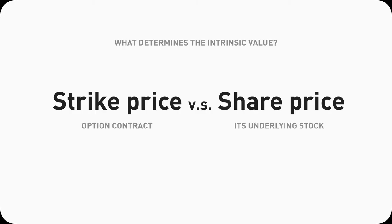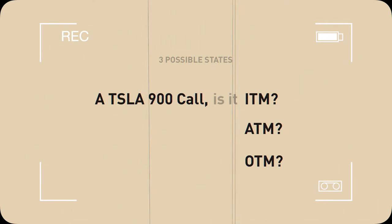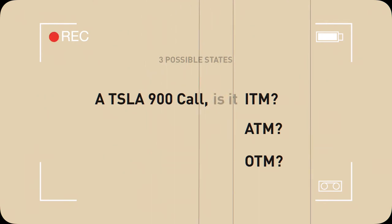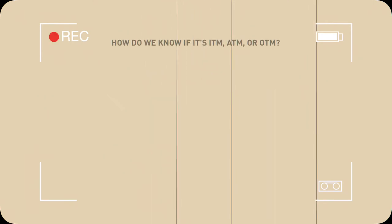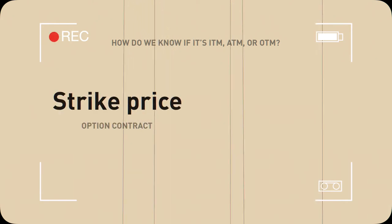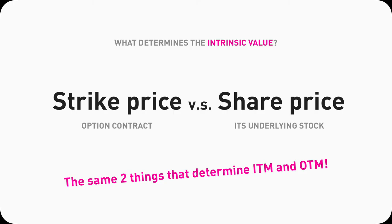Let's dive into the details. Intrinsic value of an option contract is determined by only two things: its strike price and the share price of the underlying stock. These are the exact same two factors that determine whether an option contract is in-the-money or out-of-the-money — that's why these concepts are very intertwined.